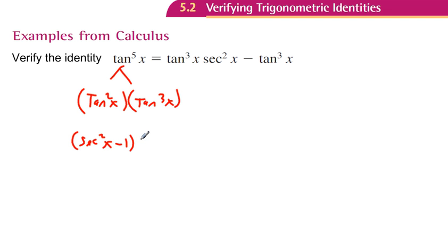Let's keep our tangent cubed of x. And now if I do the distribution property, distribute tangent cubed times secant squared is just tangent cubed of x, secant squared of x, and then tangent cubed times negative 1 is negative tangent cubed of x.